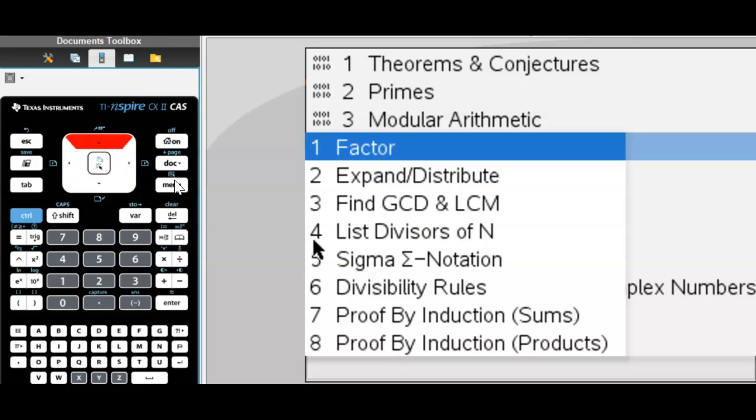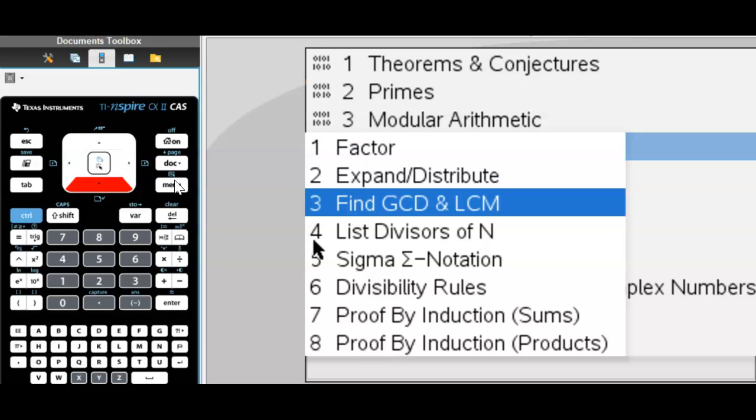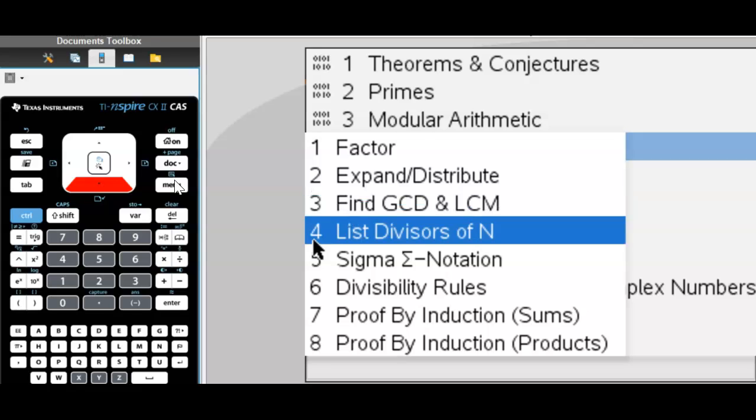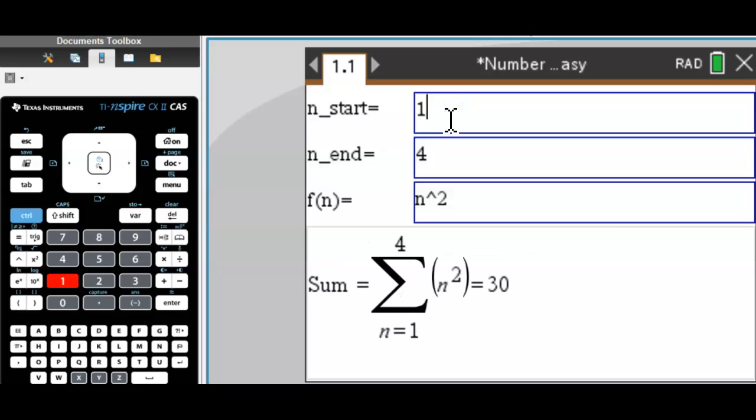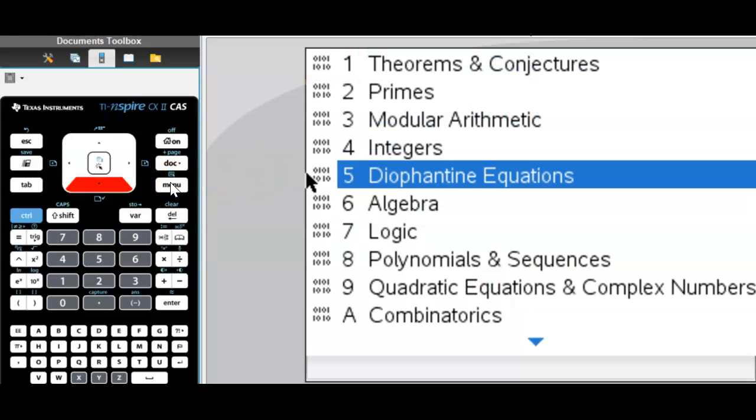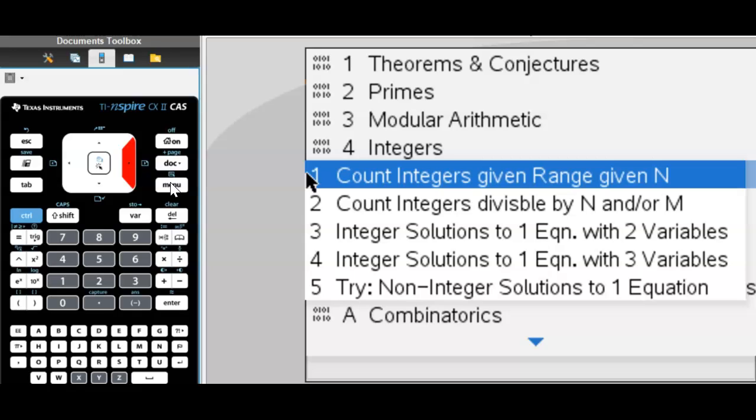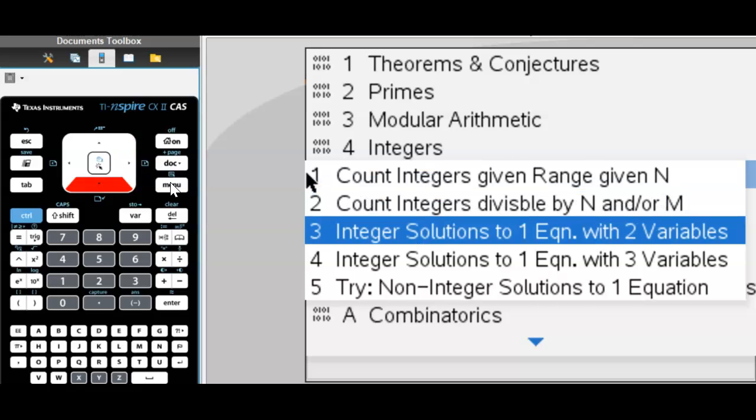Anything about integers: factoring, expanding, find greatest common divisor, least common multiple, sigma notation. If you're familiar with sigma notation, the sum from 1 to 4 of n squared will give you 30, because 1 plus 4 plus 9 plus 16 is equal to 30. You can change your function here and you get correct answers right away. Works like a charm. Diophantine equations are equations in whole number solutions. You can have some fun here.